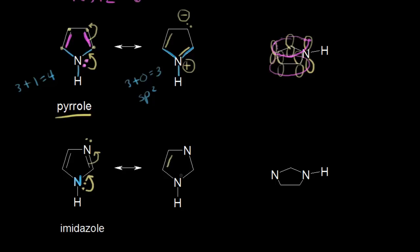So once again, this nitrogen in blue is actually sp2 hybridized. It's the exact same situation that we saw in pyrrole — at first it looks like those electrons might be localized to that nitrogen, but those electrons are actually delocalized in the ring because of the possible resonance structure. So the nitrogen in blue that's bonded to the hydrogen is sp2 hybridized. Therefore, it has a p orbital, and I can go ahead and draw the p orbital on that nitrogen.